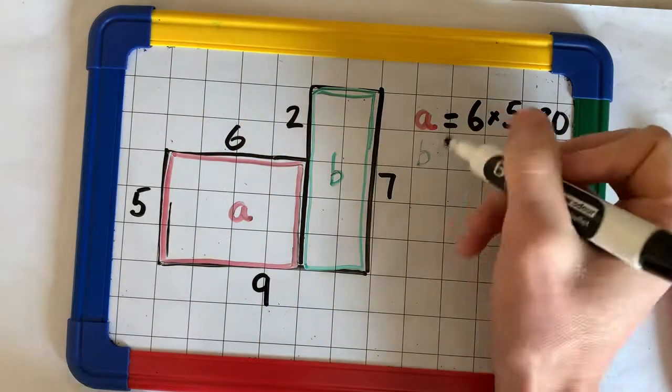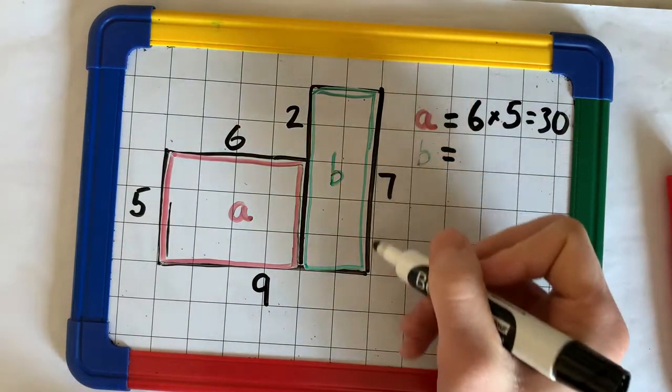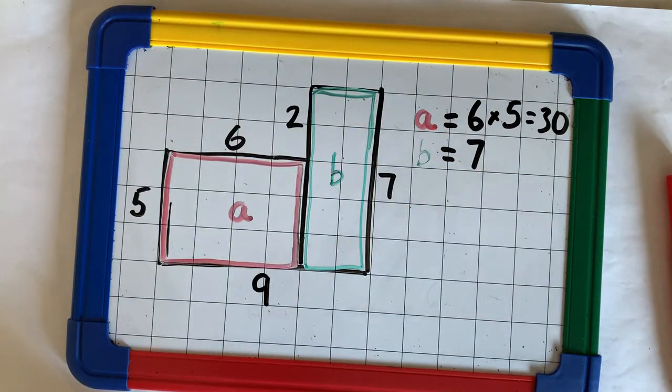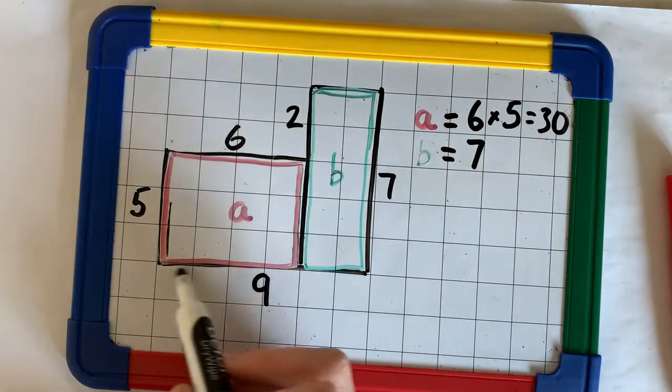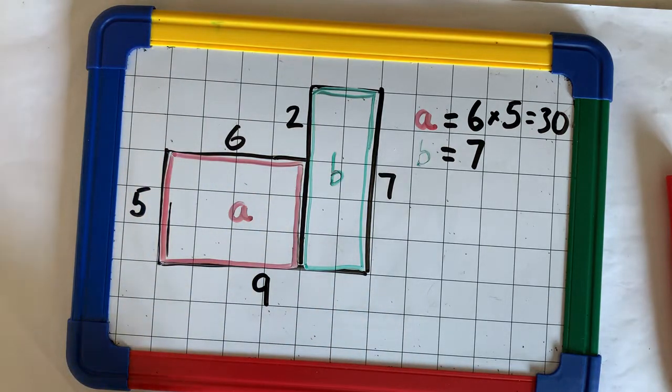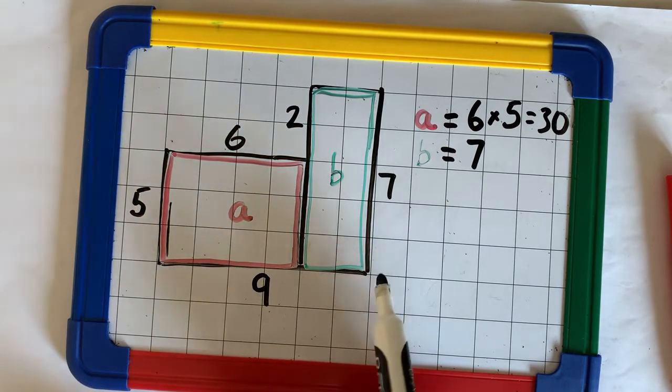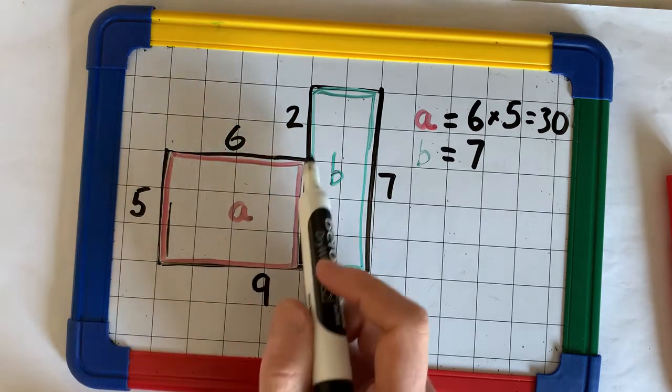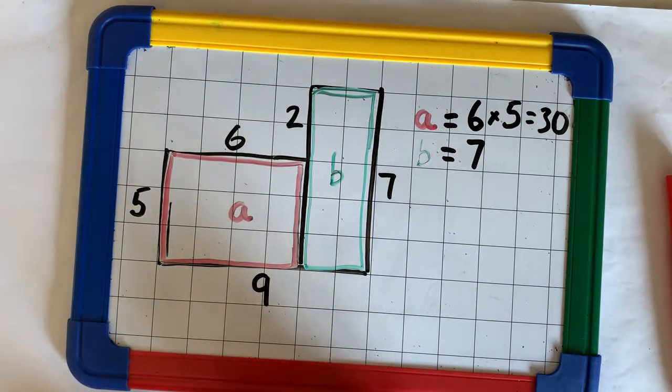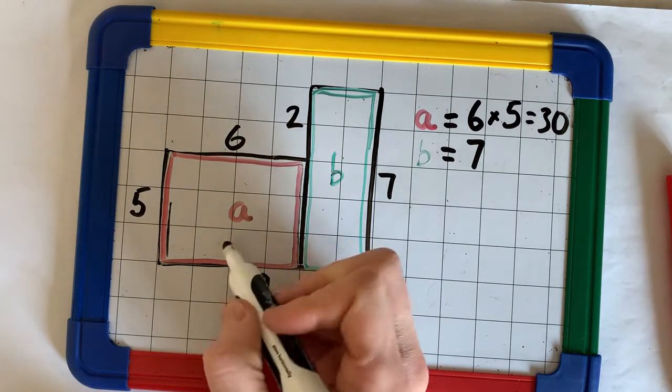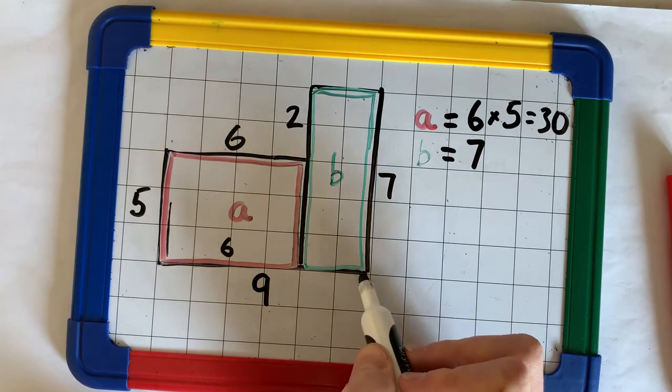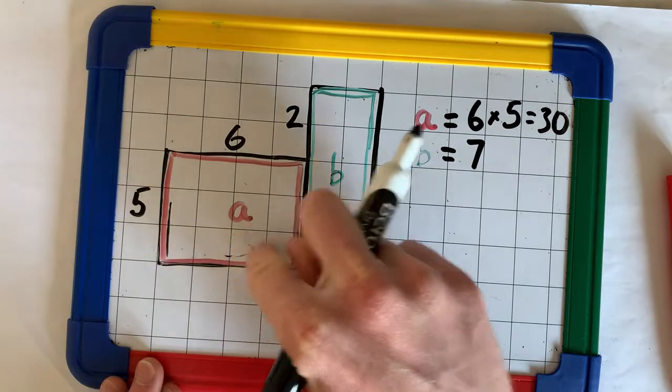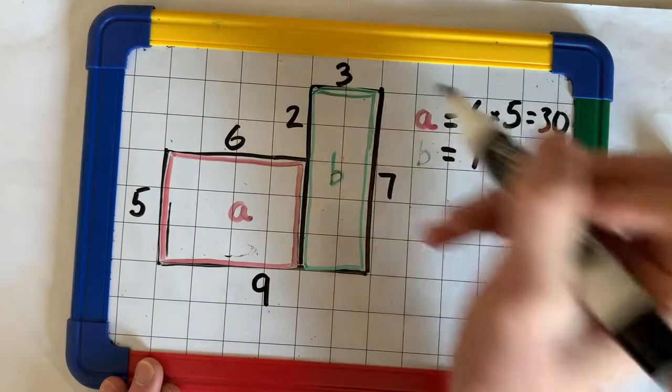So, B, we've got our length, that's 7, but we don't have a width. Again, we can use our two other widths to help us. If all of this is 9, and this bit here is 6, we know that 6 add this bit must make 9. Because we know that this bit here is 6, and this bit we don't know at the moment, this bit to here. 6 add what makes 9? 6 add 3 makes 9.